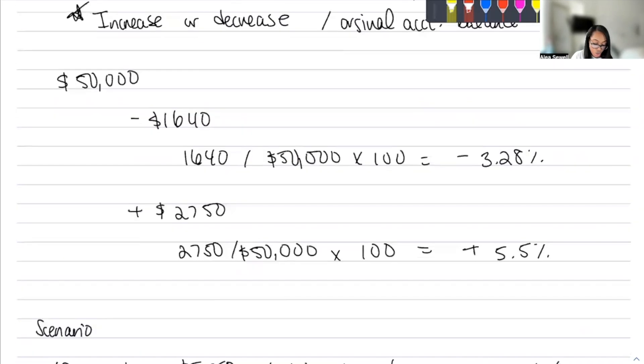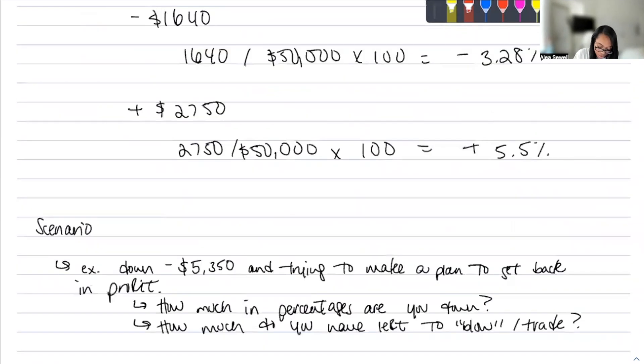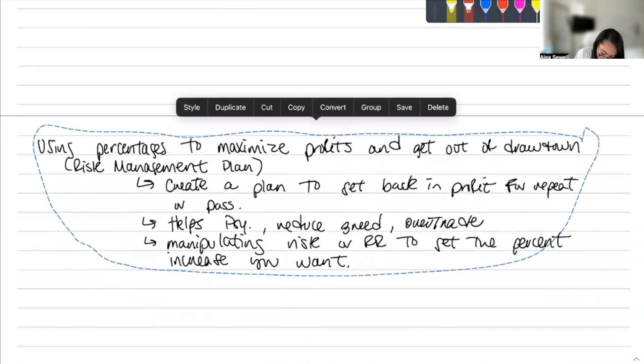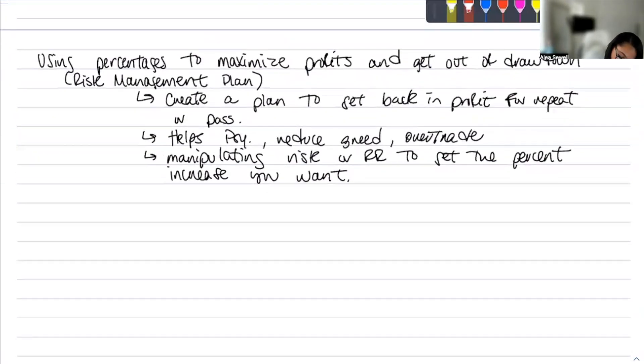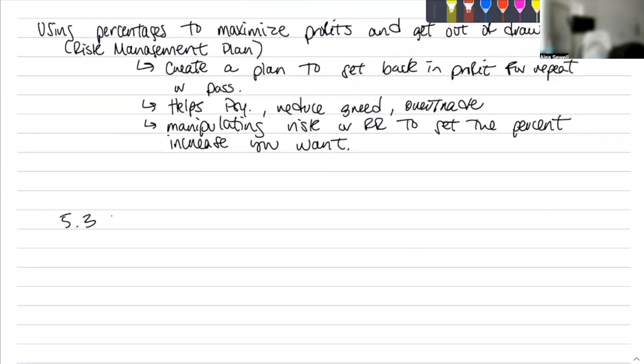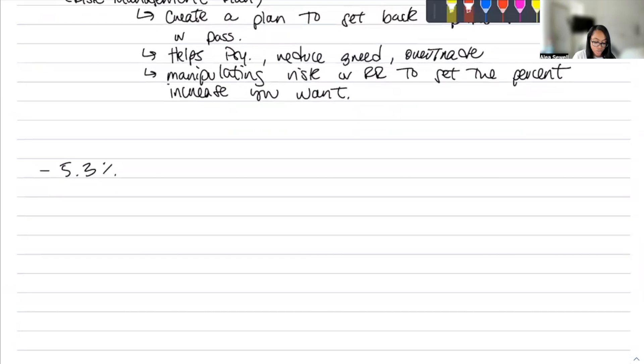Going into the next point, using percentages to maximize your profits and get out of drawdown. Let's go ahead and create a plan. So create a plan to get back in profit. So I'm currently, remember, we're down 5.35%. We're down 5.3%. And let's get back in profit first. So we're going to utilize percentages or risk or rewards to make that happen. So I typically risk 1%. I might do 0.5, but it's typically 1 or higher. Let's just do 1. And on average, I'm hitting 1 or 2 risk-reward.